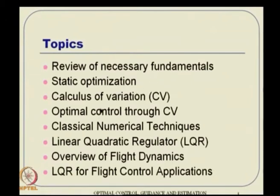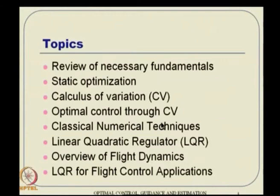Then we will go to calculus of variations and cover concepts relevant to us, before proceeding to optimal control through calculus of variations. That will be followed by numerical techniques to solve variational calculus problems, which essentially leads to something called the two-point boundary value problem. This is one reason why optimal control is computationally very challenging and overwhelming.